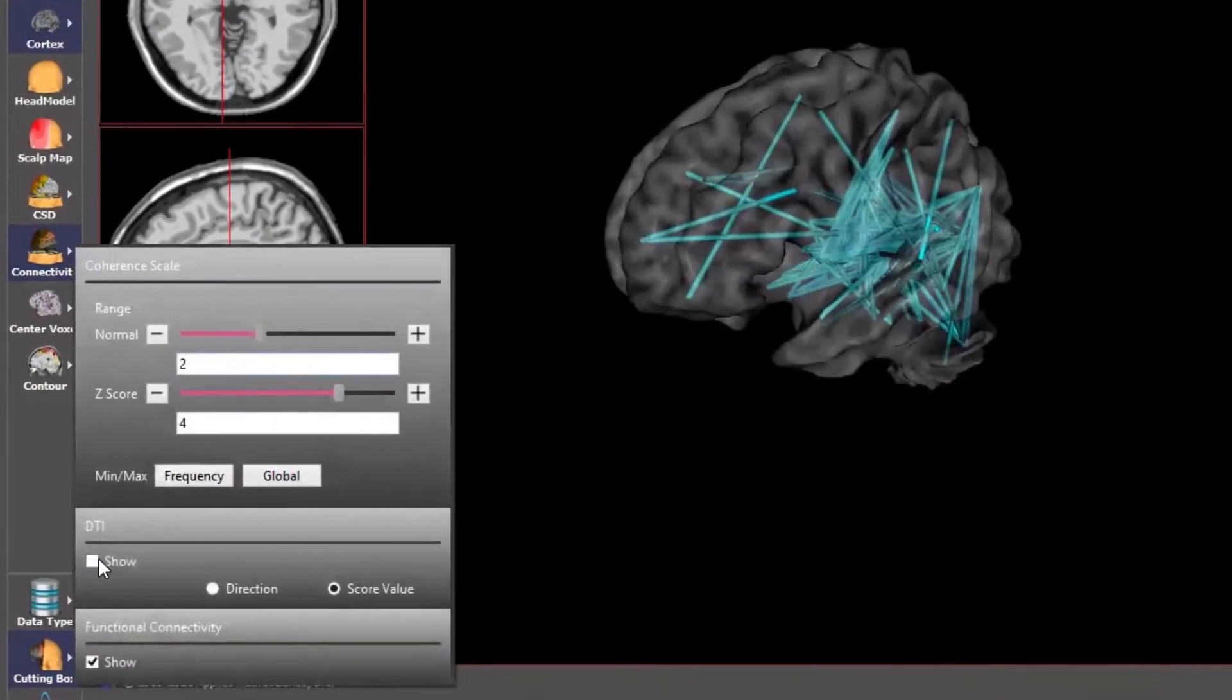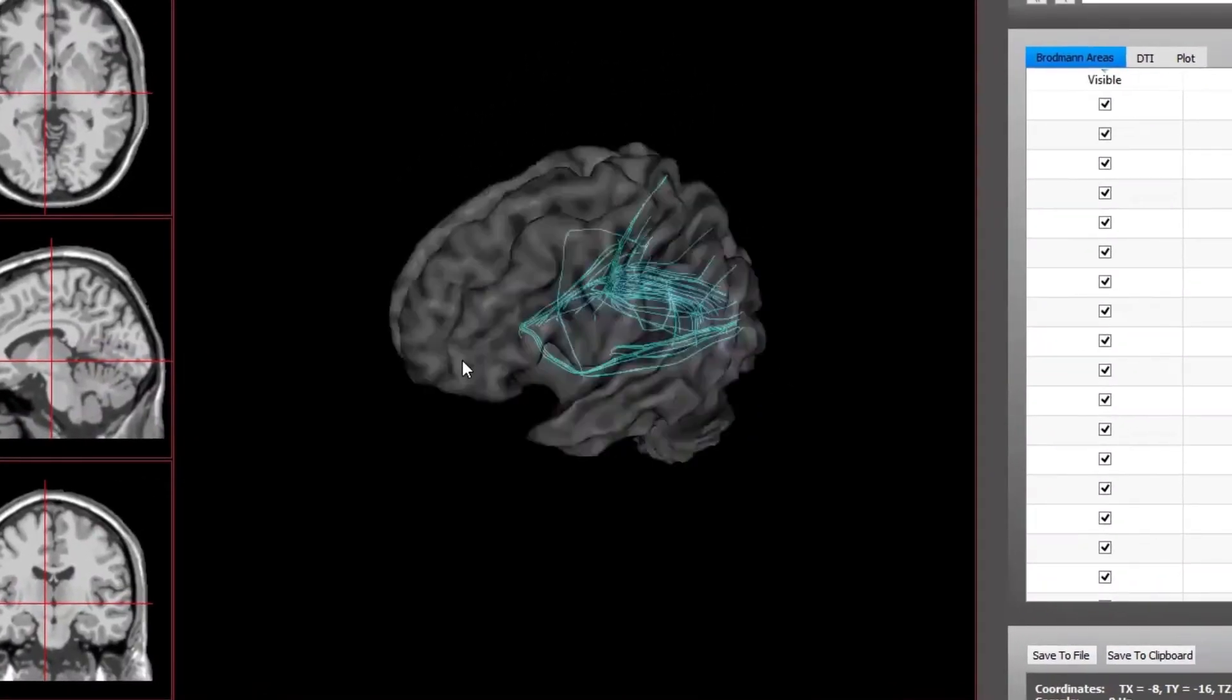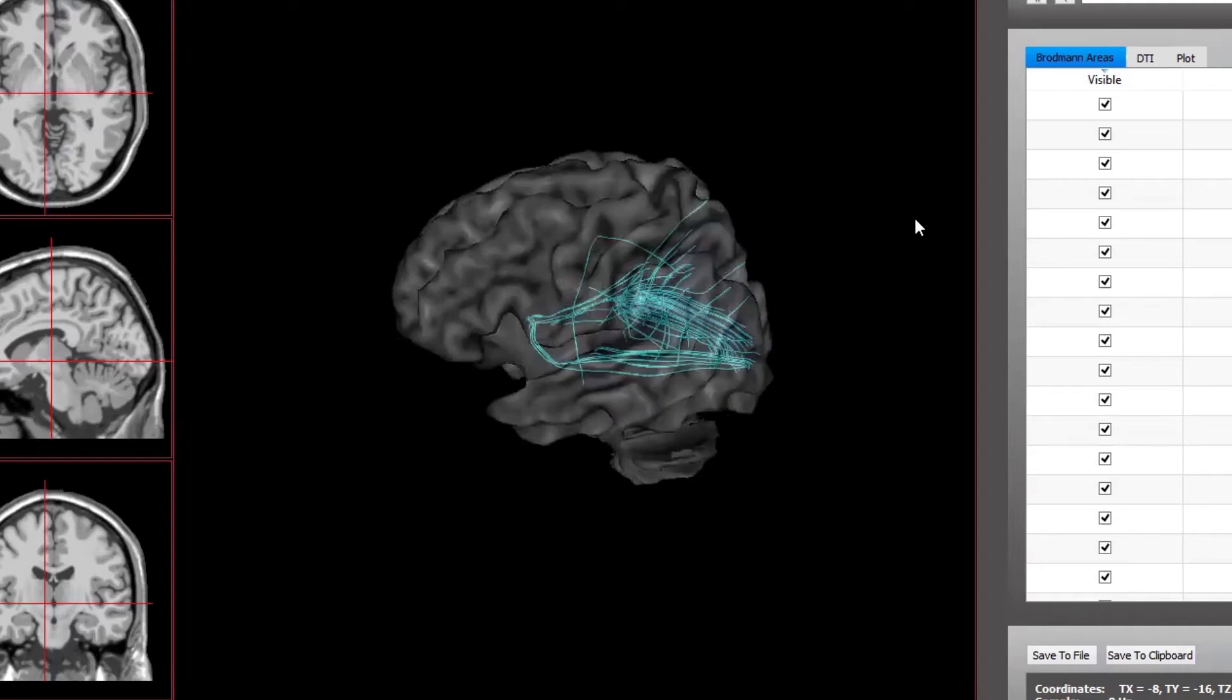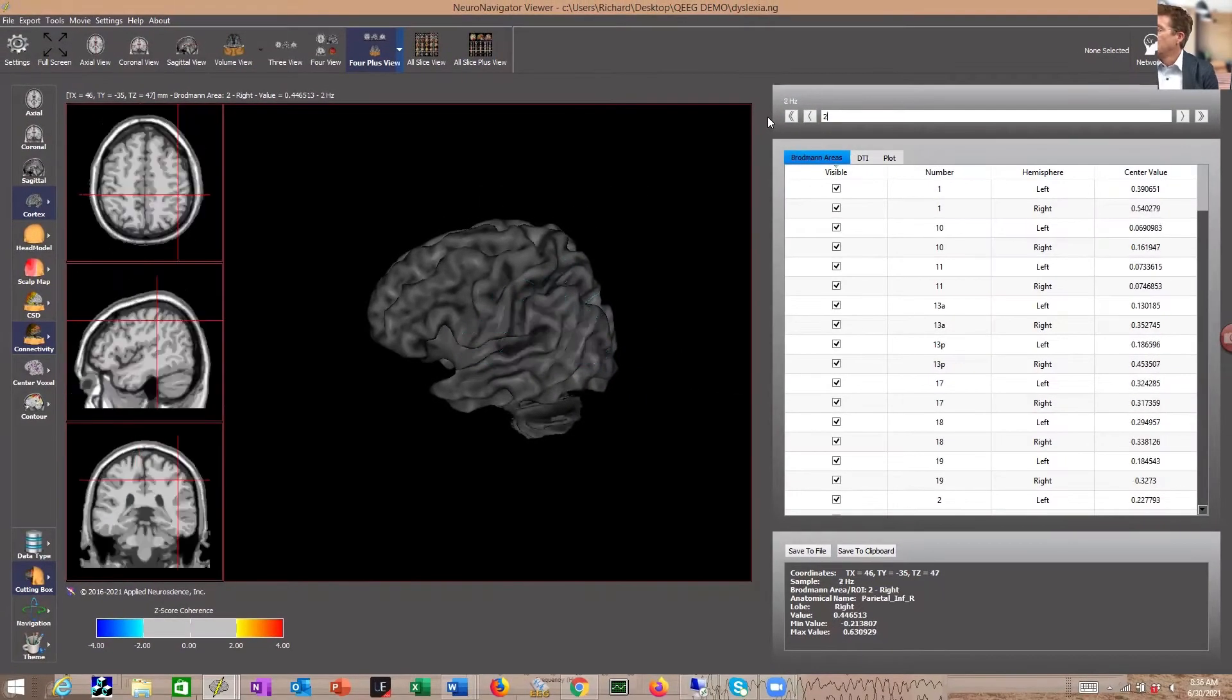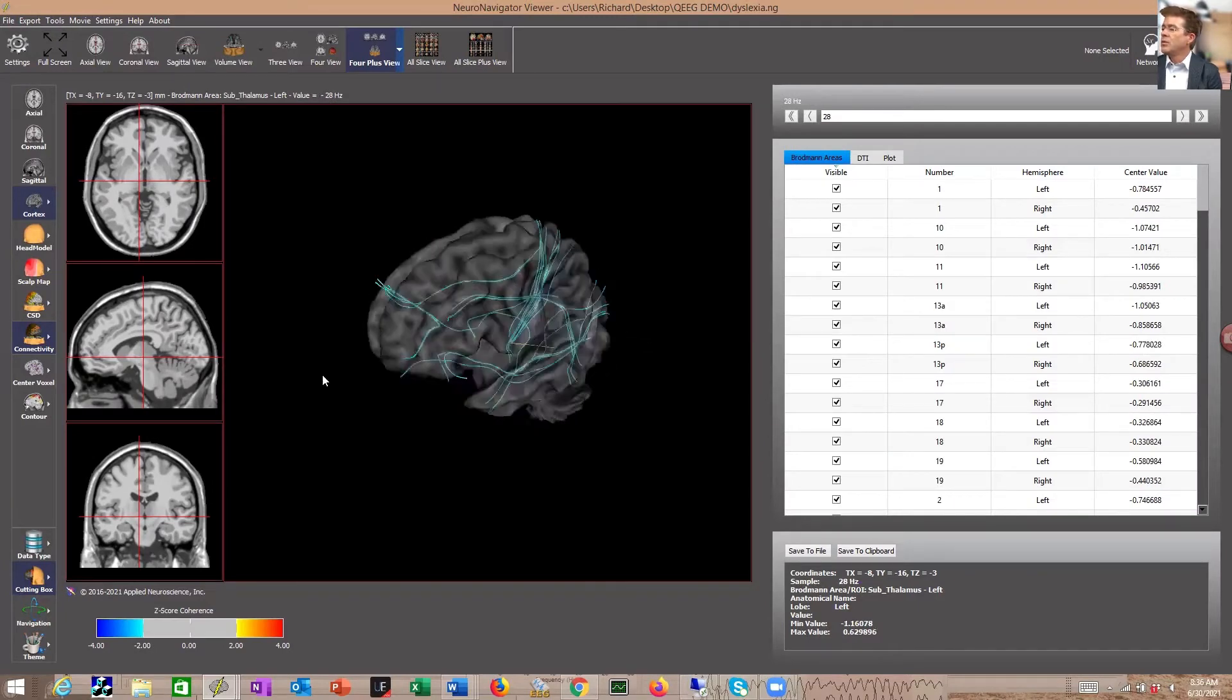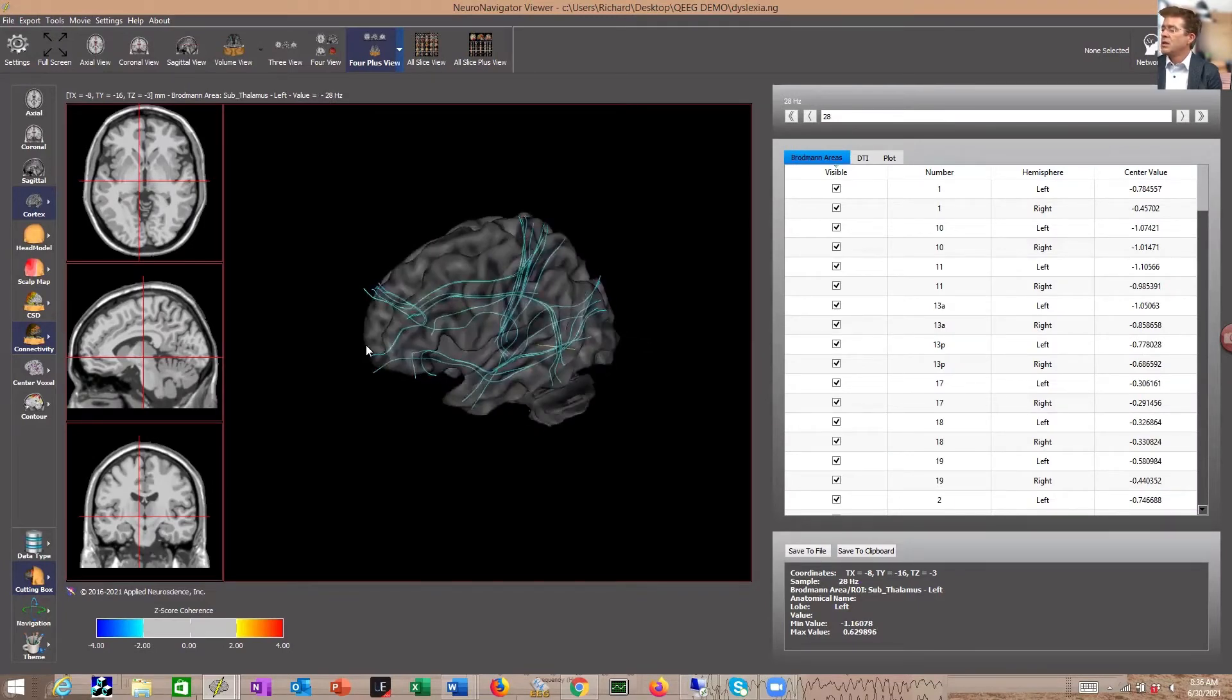Now, we can actually use diffuse tensor imaging to visualize aspects of the fasciculi and, more importantly, for this child, the arcuate fasciculus and other areas that would be important in the reading process. And we can see these are very much dysregulated.